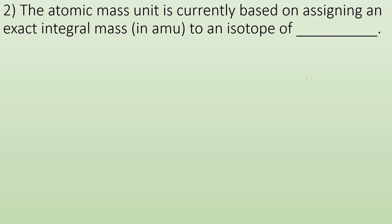The atomic mass unit is currently based on assigning an exact integral mass in AMU to an isotope of carbon 12. How are we defining what 1 AMU is? We're saying carbon 12 is exactly 12 atomic mass units. So that's how we're defining what that is. Hasn't always been carbon, but that's what we're going with now.